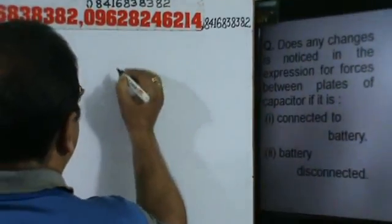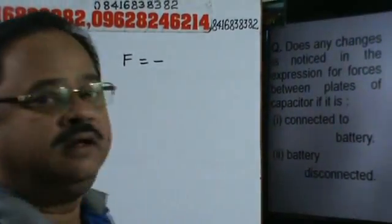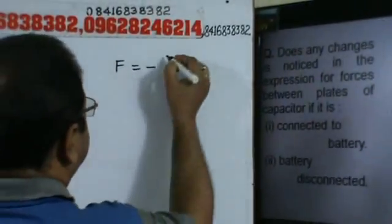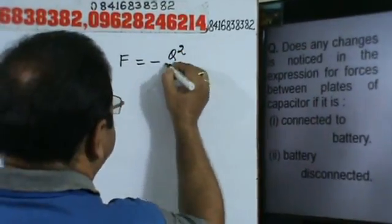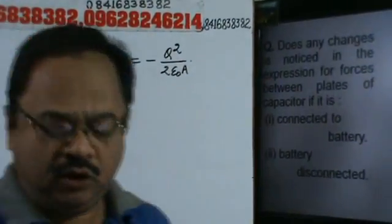Now, we gave you forces between plates of a capacitor, that this is minus Q squared by 2 epsilon A.